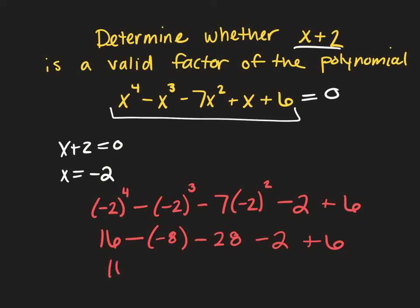And then we're subtracting negative 2 to the 3rd would give us a negative 8. And then negative 2 squared is 4, times 7 is a negative 28, then minus 2 plus 6. So then we're going to have 16 plus 8, minus 28, minus 2 plus 6. So then you have 16 plus 8, which gives you 24. Then minus 28 gives you negative 4, minus 2 is negative 6, and then plus 6 is 0.